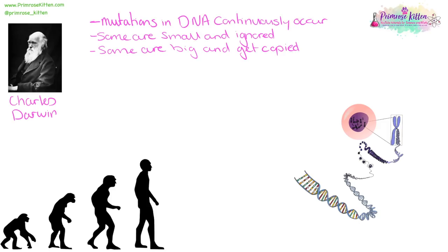All of these changes added together — these small changes, these big changes — this is our theory of natural selection, of evolution. Of gradual change happening over time, this theory thought up by Charles Darwin. That means we are more suited to our environment.